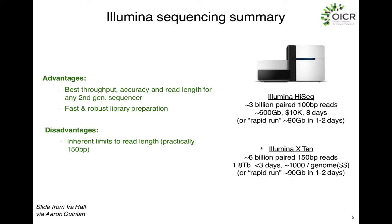Sanger sequencing was the first chemistry developed, and then multiple technologies were attempted to create next-generation sequencing, which came about with Solexa — the company that Illumina actually bought. Their chemistry platform was massively parallel sequencing, enabling sequencing of many reads at the same time.